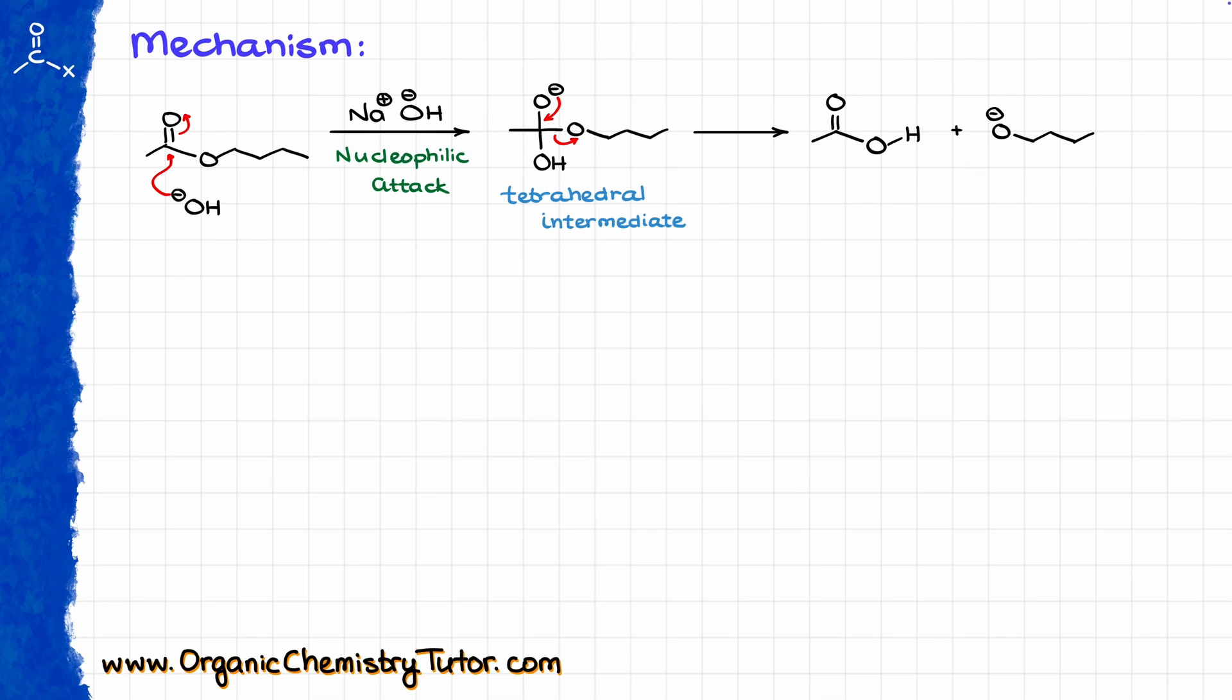But here is something extremely important to keep in mind. We have just produced two species, one of which is an acid and another one is a base. Those two species are incompatible with each other. They cannot coexist in the same solution, and they will immediately participate in acid-base chemistry and proton transfer. So, we immediately going to see that butoxide going to come in and pull off the proton from our carboxylic acid that we have just made. And this proton transfer is going to give us our carboxylate ion and our alcohol.